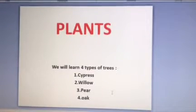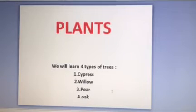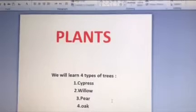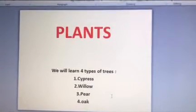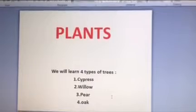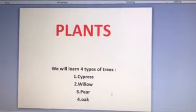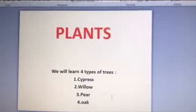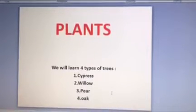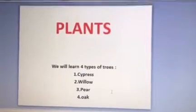So here kids, we will learn about four types of trees. The first type is cypress tree. The second one is willow tree. The third one is pear tree. And the last one is oak tree.